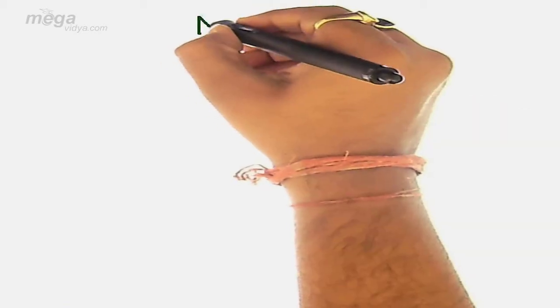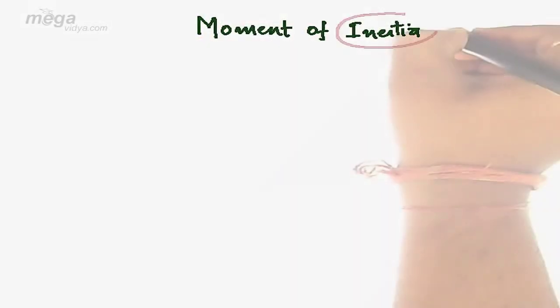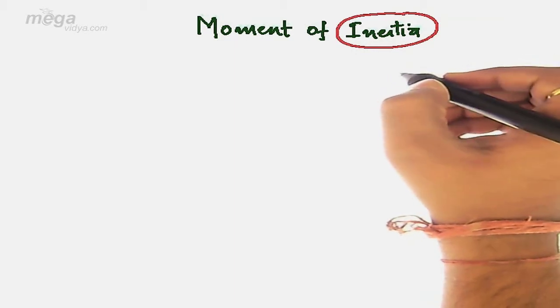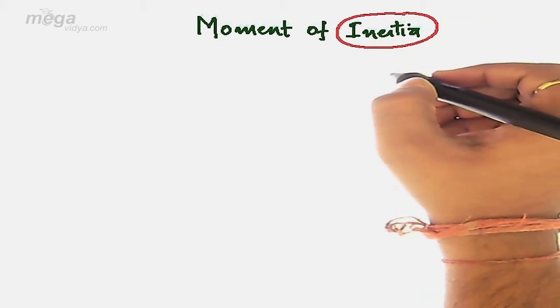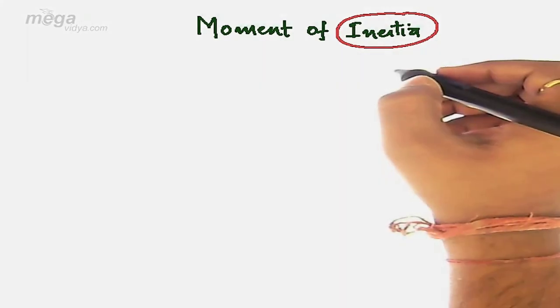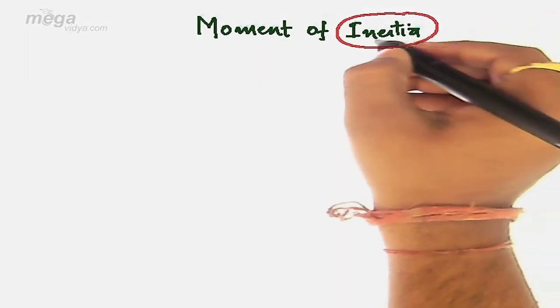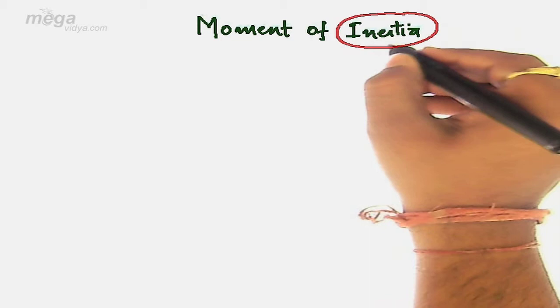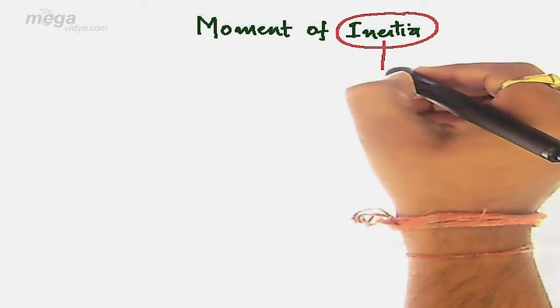The first question which needs a solution is what moment of inertia is. But before discussing moment of inertia, let's discuss inertia. What is inertia? As we have already studied, inertia is the inability of a body to translate by itself. In that case, we have studied three parts of inertia, in which one of the parts was inertia of direction.